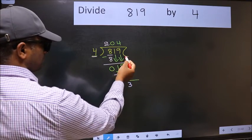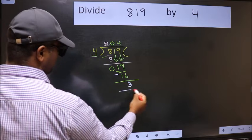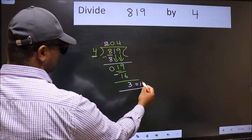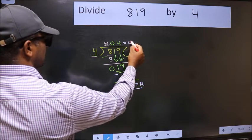No more numbers to bring it down. So we stop here. This is our remainder and this is our quotient.